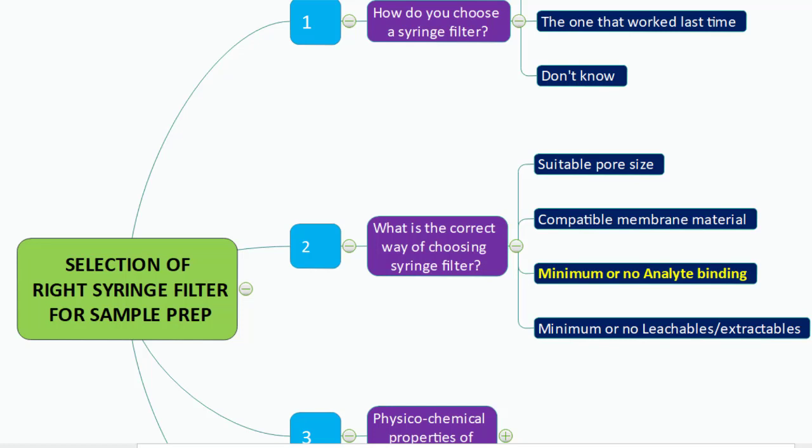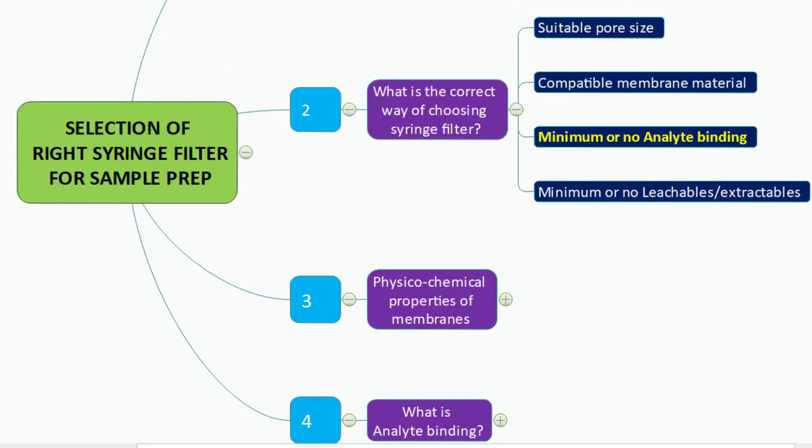For UPLC or LC-MS, you can think about 0.2 micron as the pore size. The filter membrane must be compatible with your sample or analyte. The filter must have minimum or no analyte binding — this is the point we are going to discuss in detail. The fourth consideration is about leachables and extractables from the syringe filter membrane.